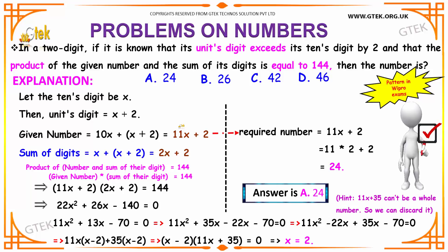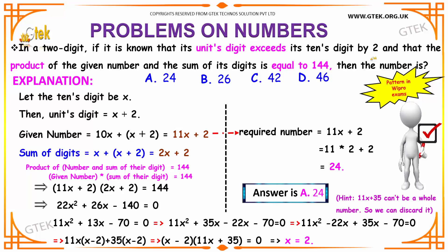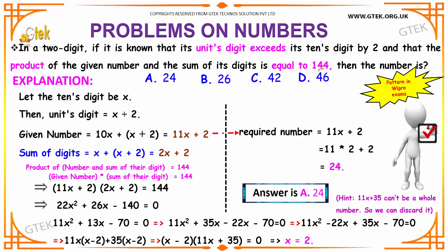Let us move on to our next example. We have a two-digit number. It is known that the unit's digit exceeds its tenth digit by 2, and that the product of the number and the sum of the digits is equal to 144. What will be the number?